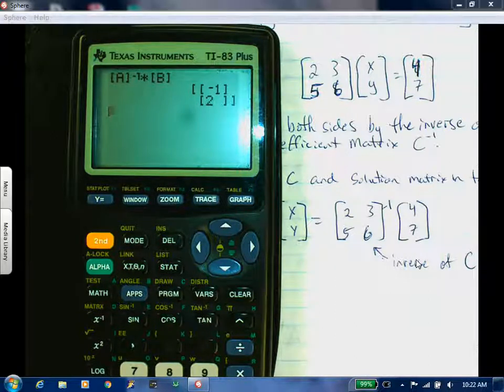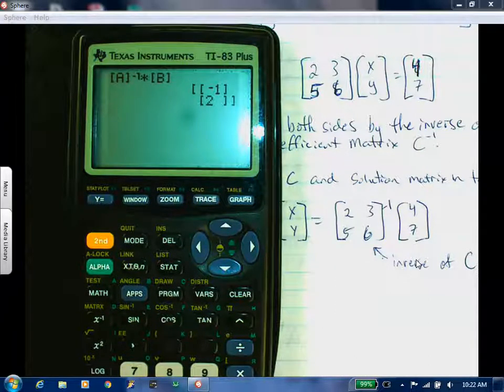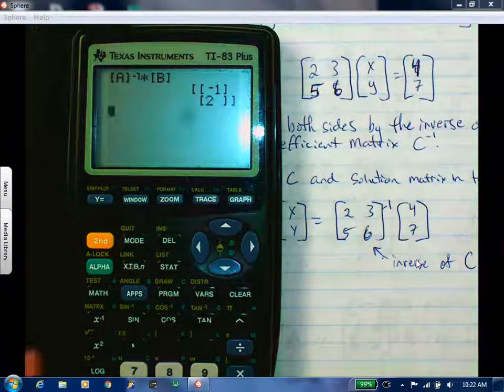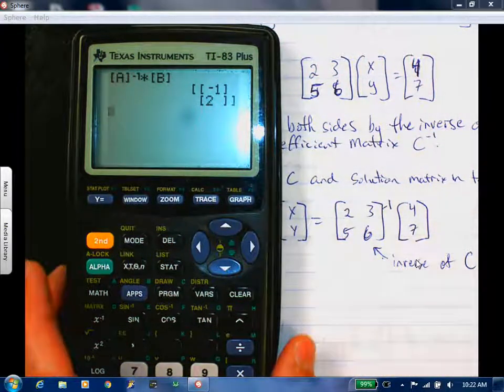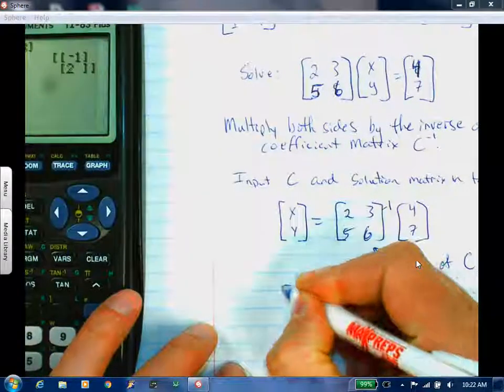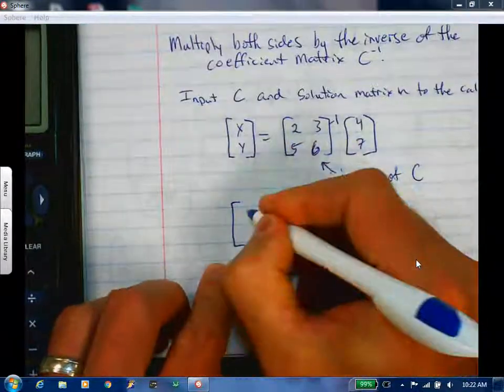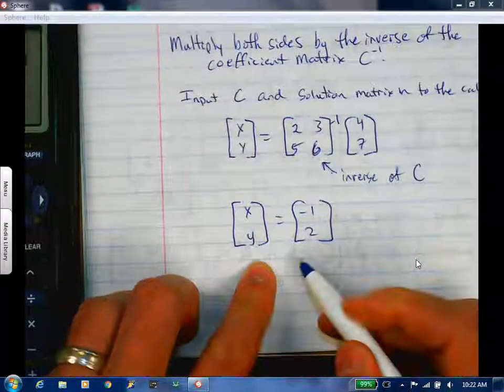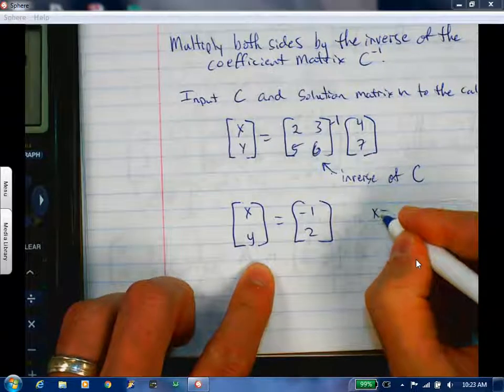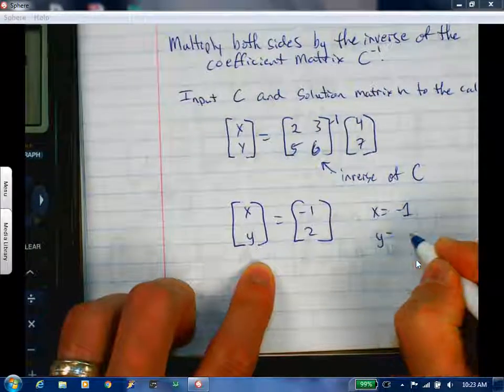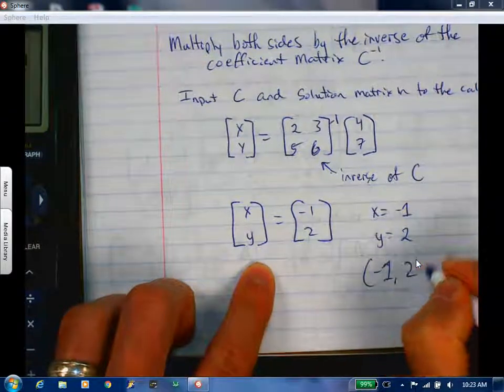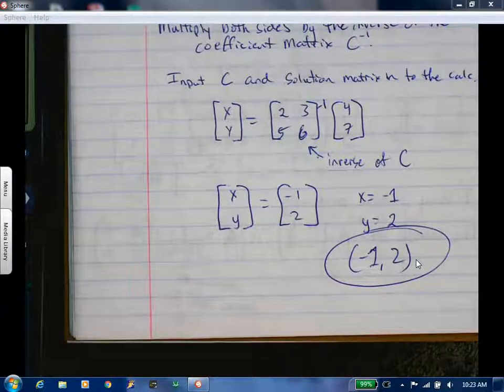Everyone get the negative one, two. Okay. So we get this. So when I multiply these two right here, you get negative one, two. So guess what x equals? Negative one. X equals negative one. Y equals 2. So you have the ordered pair, negative one, two. You have your answer. That's where they intersect.